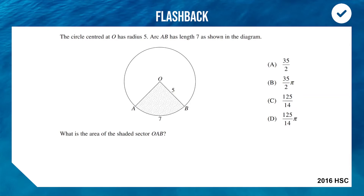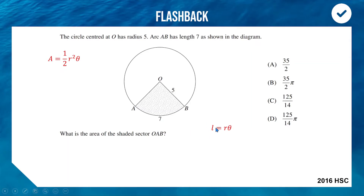To find the area of a sector we use the formula A = ½r²θ, where θ is in radians. We have a radius but no angle — however we do have an arc length. Using the arc length formula l = rθ, we rearrange to find θ. Setting arc length equal to seven and radius equal to five, dividing both sides by five gives θ = 7/5 radians.